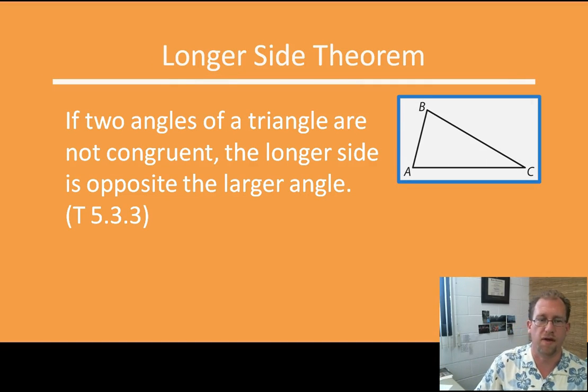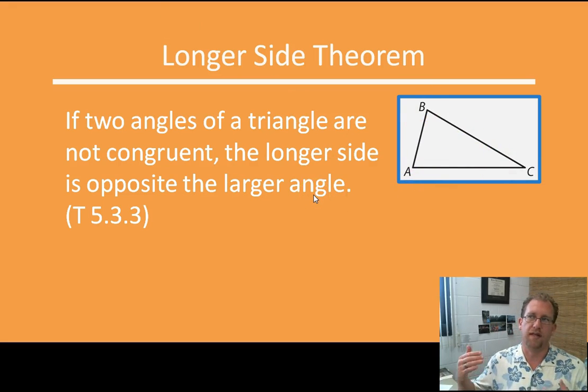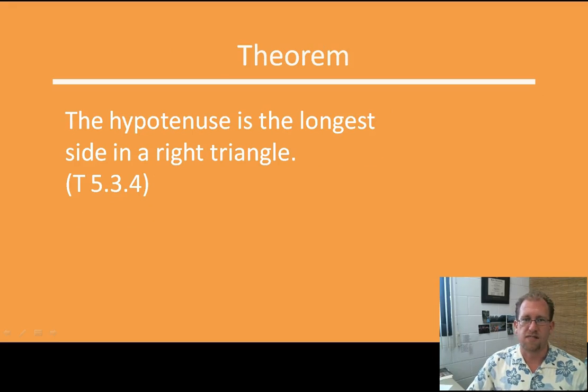The longer side theorem, if two angles of a triangle are not congruent, the longer side is opposite the larger angle. It's exactly the opposite of the last thing we said. If I have angles that are dissimilar, then they will relate to each other the same way that their opposite sides do. It's basically the converse of the last idea. A consequence of this is that because a right triangle only has one 90-degree angle and the other two have to be acute, then the side opposite the 90-degree angle, which is the hypotenuse, is going to have to be the longest side of a right triangle. And you already know that. A squared plus B squared equals C squared. C squared is always bigger than A or B. But here we know why, because it's opposite the largest side of the triangle.